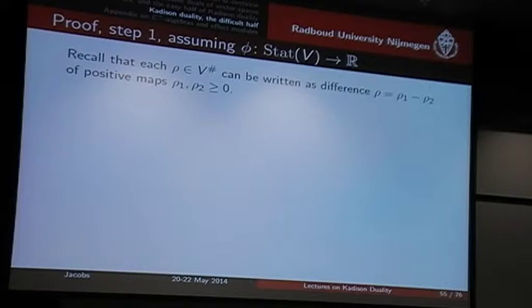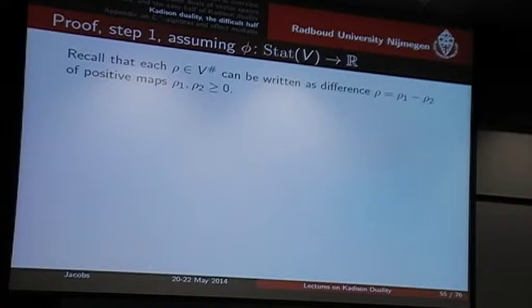Now, I have this phi, and I want to define this extension to all bounded continuous maps. On such a rho, I have to define phi-overline. Such a rho can be split as a difference of two positive functionals — rho one minus rho two, both positive. Now, these positive maps are not yet states. So I have to turn these rho-one and rho-two into states.